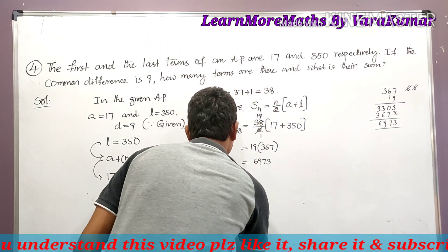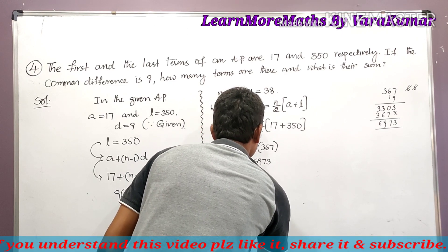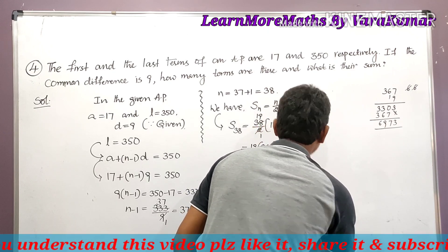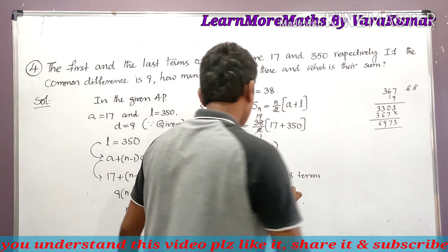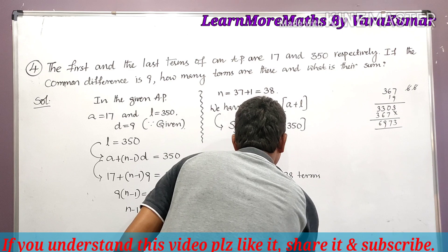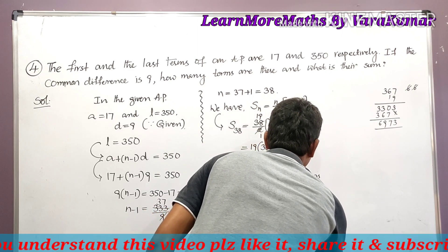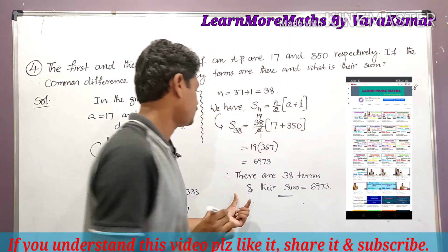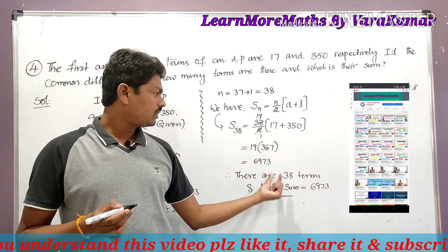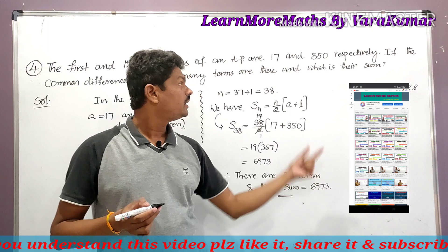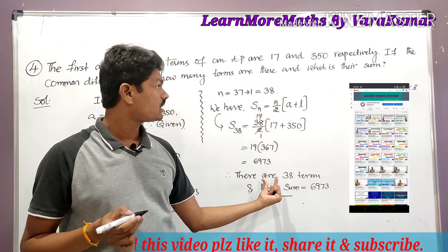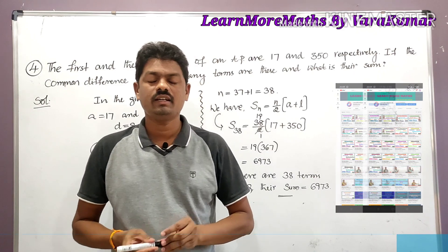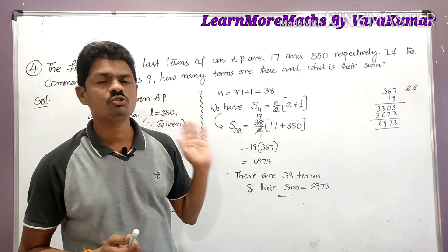In conclusion, therefore there are 38 terms in the given AP, and their sum is equal to 6973. This completes the fourth problem of exercise 6.3.